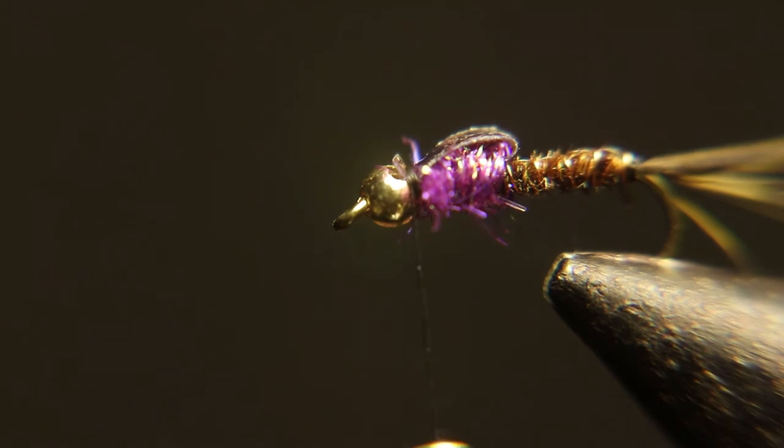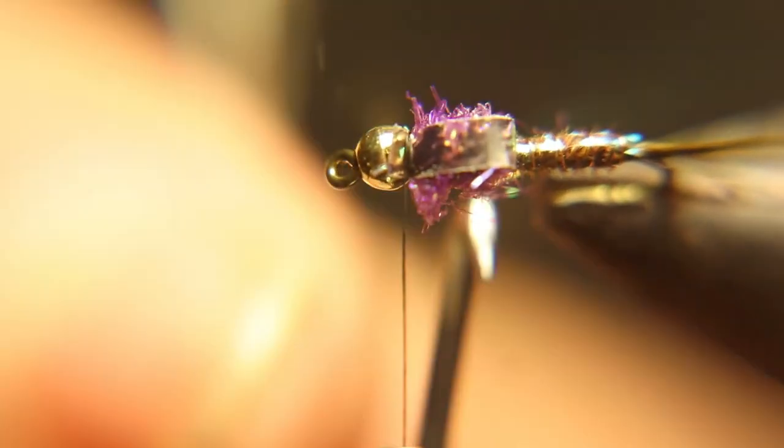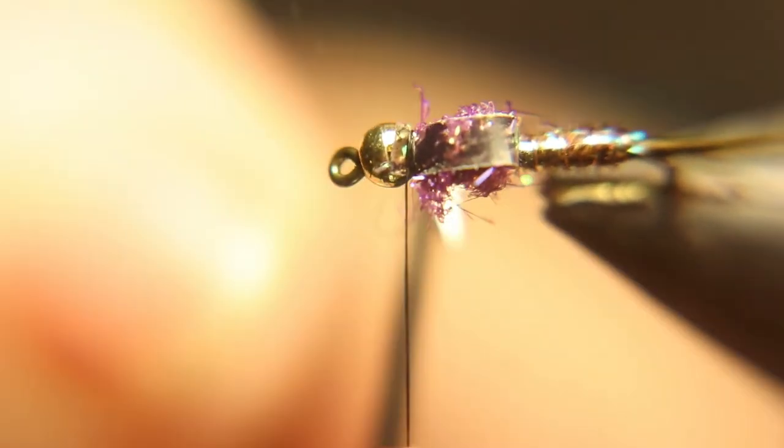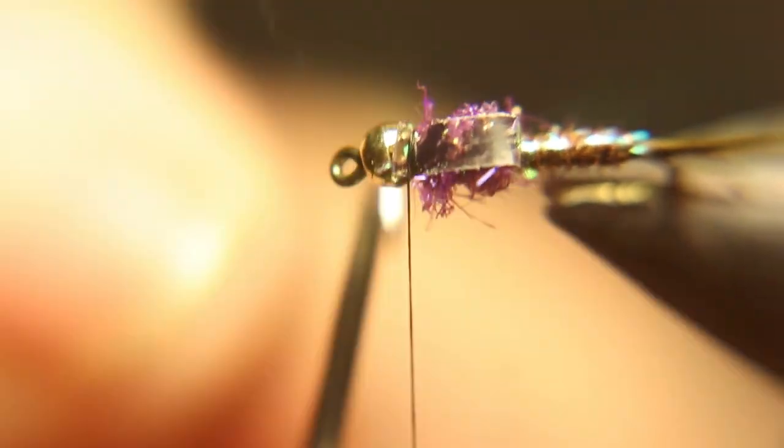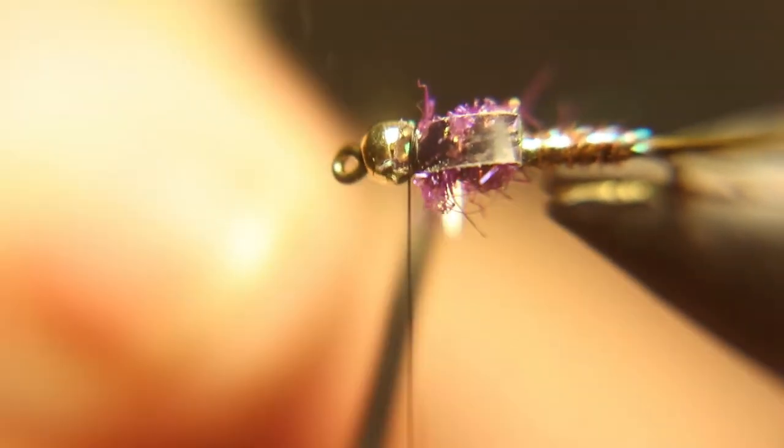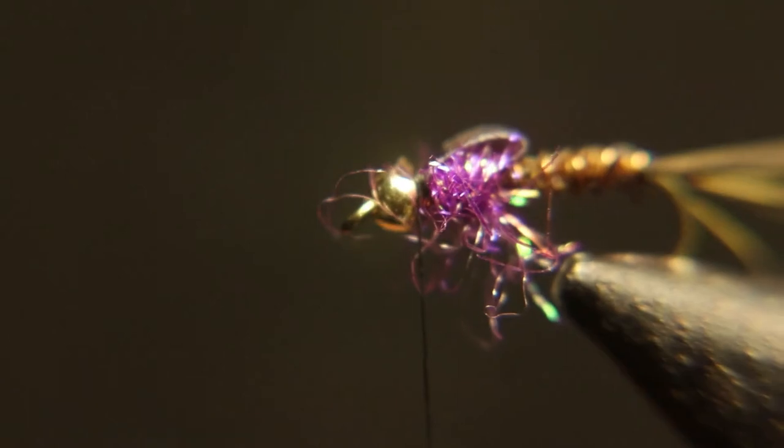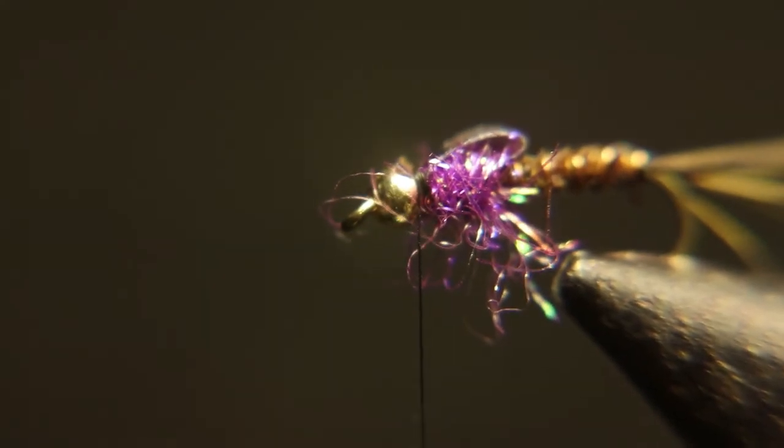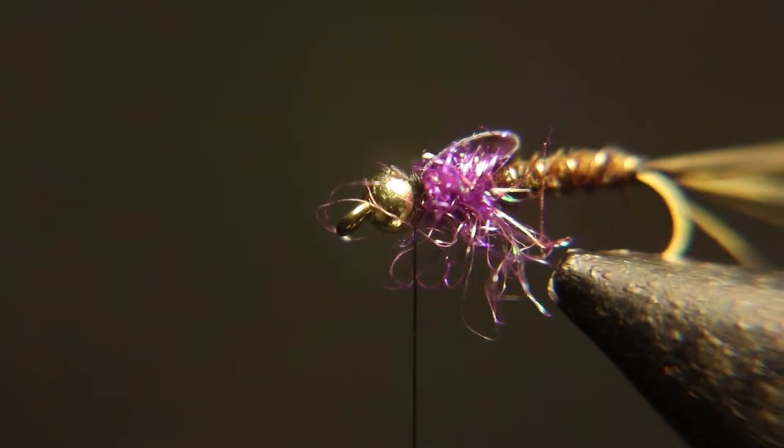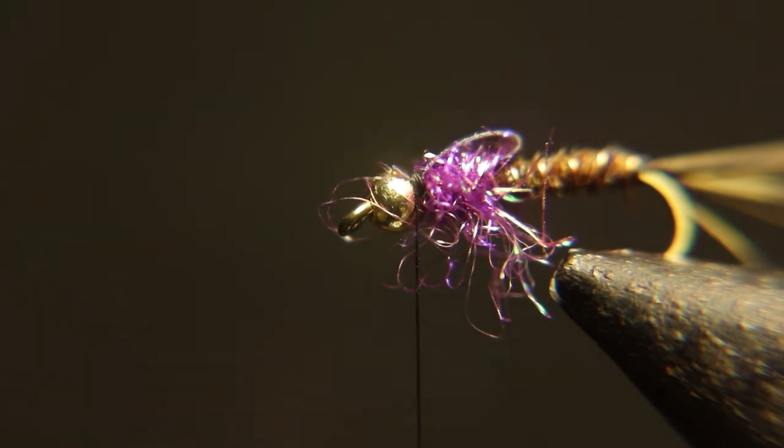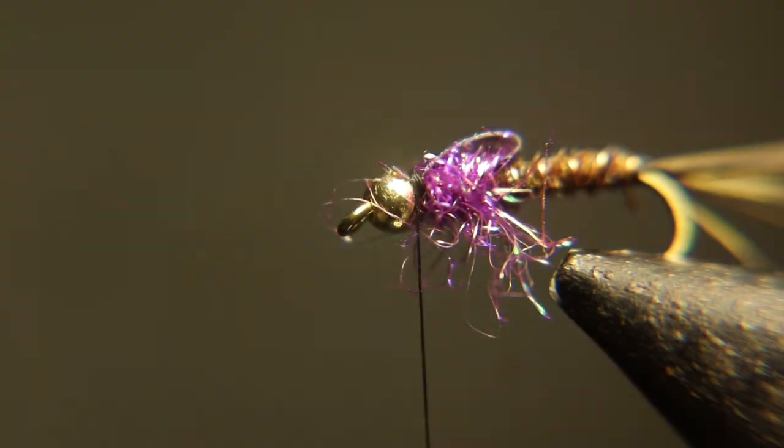Now you're going to pick out the bottom of this purple dubbing. You want to stretch it out long and make it look like legs. But wait, hold on a second. This isn't the way I would tie this. So keep staying after this. When I'm done with this, I'll go into how I would add lively legs to this.